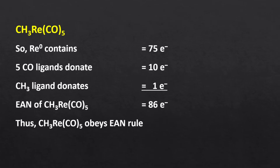The atomic number of rhenium is 75. Thus, 75 electrons from rhenium, 10 electrons from 5 carbonyl ligands, and 1 from the methyl ligand. Consequently, the effective atomic number of this complex is 86, meaning this complex is also stable.